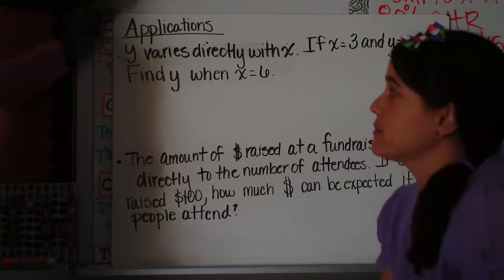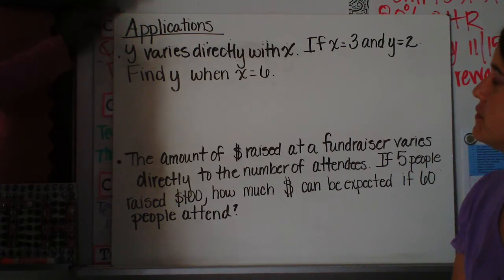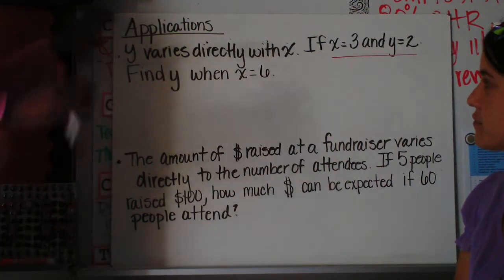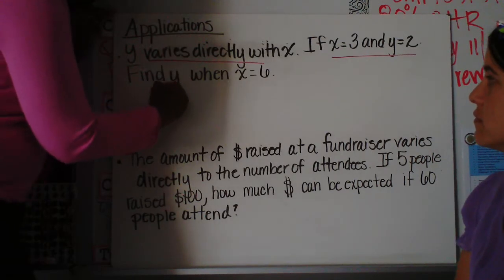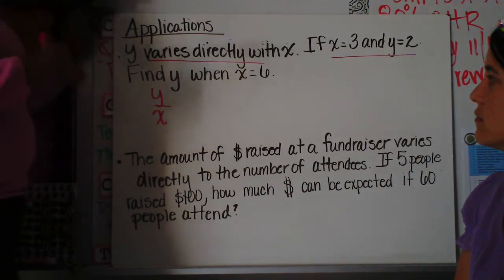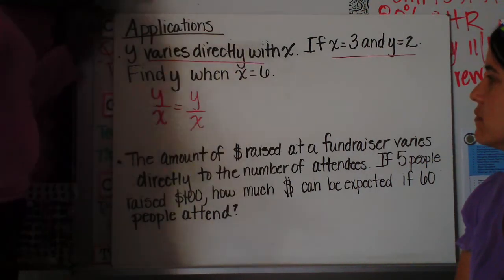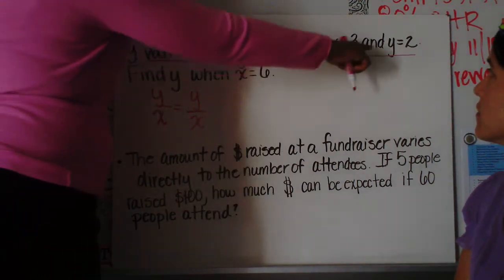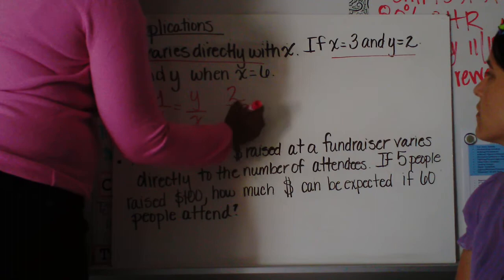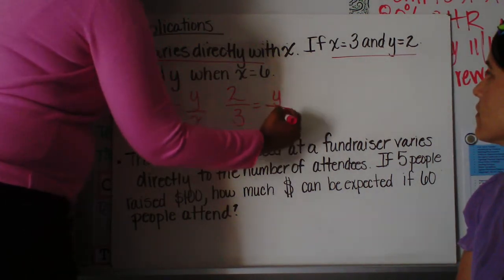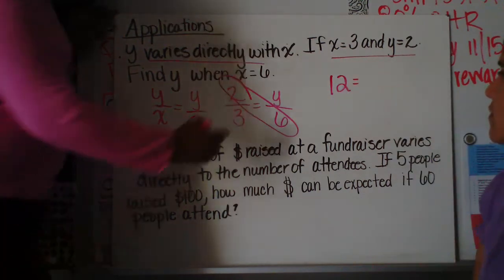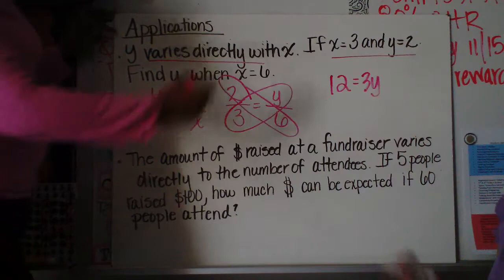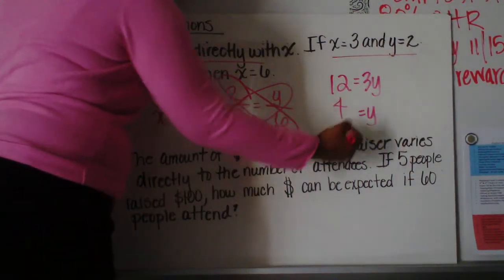So let's do some applications, some word problems. Alright, so the first one is y varies directly with x. If x equals 3 and y equals 2, we want to find the y value when x equals 6. Now, there's a shorthand way to do this. If we know something varies directly, we can write a proportion. Varying directly means it's y over x. So you can solve it by doing a proportion y over x equals y over x. So what is the y value in the first thing? It's 2 over 3 equals, we don't know y, over 6. So 2 times 6, we're going to cross multiply to 12, equals 3y. And then you just solve for y by dividing by 3. So y is going to equal 4.